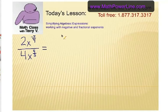Today's lesson has to do with simplifying algebraic expressions, working with negative and fractional exponents. This question comes from Doug, who's a viewer and has a very specific question: How do you simplify 2x to the negative 7 fourths power over 4x to the 4 thirds power? We've got a negative exponent there, and both of these are fractional exponents. We have to simplify this.